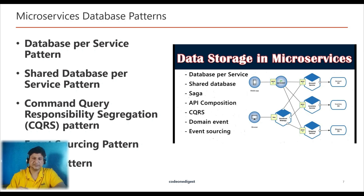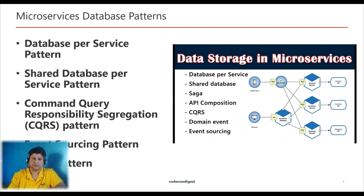Fourth is Event Sourcing — this pattern defines an approach to handling operations on data driven by a sequence of events, where each event is recorded in append-only storage. Fifth and last is the Saga Pattern, which is useful when each service has its own database and a business transaction spans multiple services, ensuring data consistency across services.